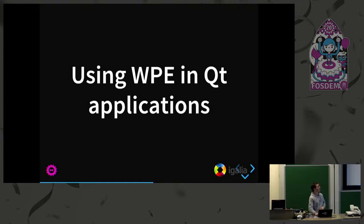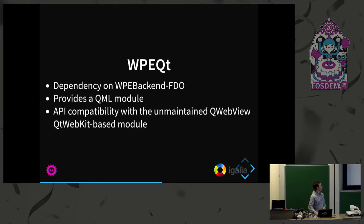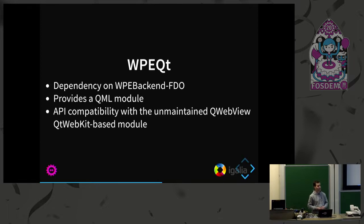Another thing I wanted to discuss is Qt applications. Qt is widely used in the industry, and if you have a web engine such as Qt WebKit or Qt WebEngine you may want an alternative — Qt WebKit is no longer maintained and has security issues, and some find Qt WebEngine too large. As an alternative, we built a QML module upstream in WebKit that can be swapped in instead of the Qt WebKit QML module. If you have an application using Qt WebKit you can use that module and it will internally use WPE, giving you a maintained web engine with security releases.